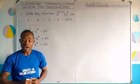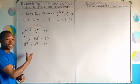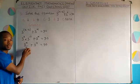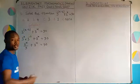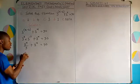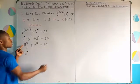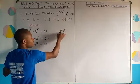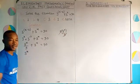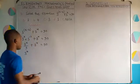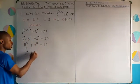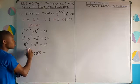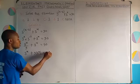We can clear the fraction by multiplying all terms by the LCM of the denominator, which is 9. Doing that gives us 3^x plus 9 times 3^x equal to 9 times 90, which is 810.